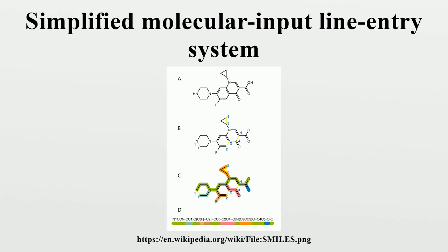SMILES notation allows the specification of configuration at tetrahedral centers and double-bond geometry. These are structural features that cannot be specified by connectivity alone, and SMILES which encode this information are termed isomeric SMILES. A notable feature of these rules is that they allow rigorous partial specification of chirality. The term isomeric SMILES is also applied to SMILES in which isotopes are specified.